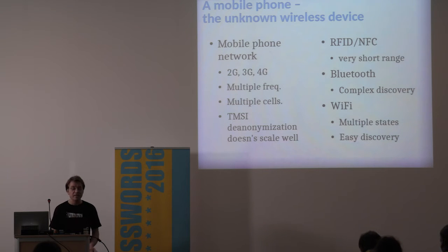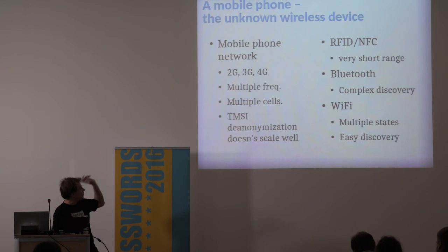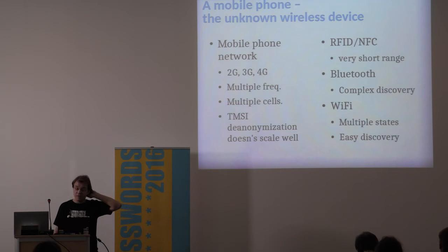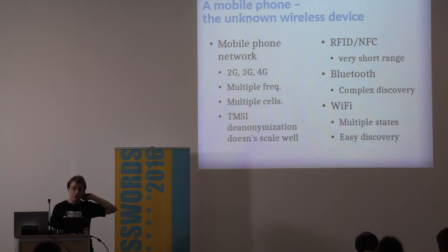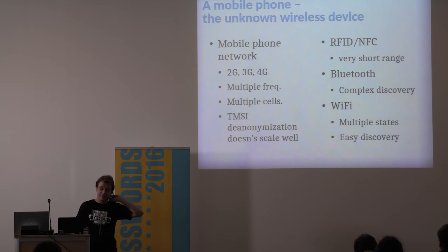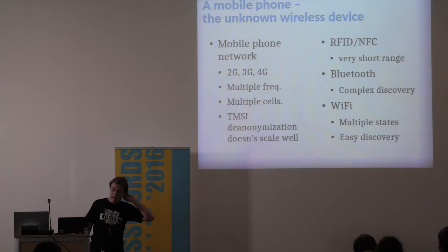Looking at the other transmitters: for mobile phones you'll probably end up with half a dozen receivers for all the different standards and frequency ranges, and it does not scale well. The other transceivers found on a mobile phone include RFID and NFC, which have a pretty short range — you need to be more or less in contact with the machine.